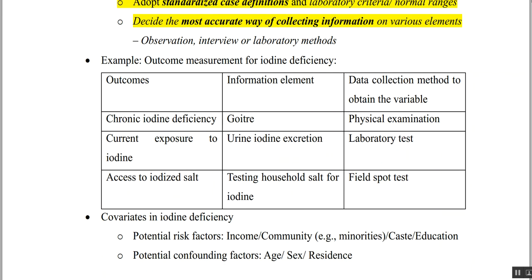The co-variables here include risk factors such as income — whether people can afford salt — community presumptions, cost, and education. Confounding factors include age, gender, and location, all of which affect goiter outcomes.